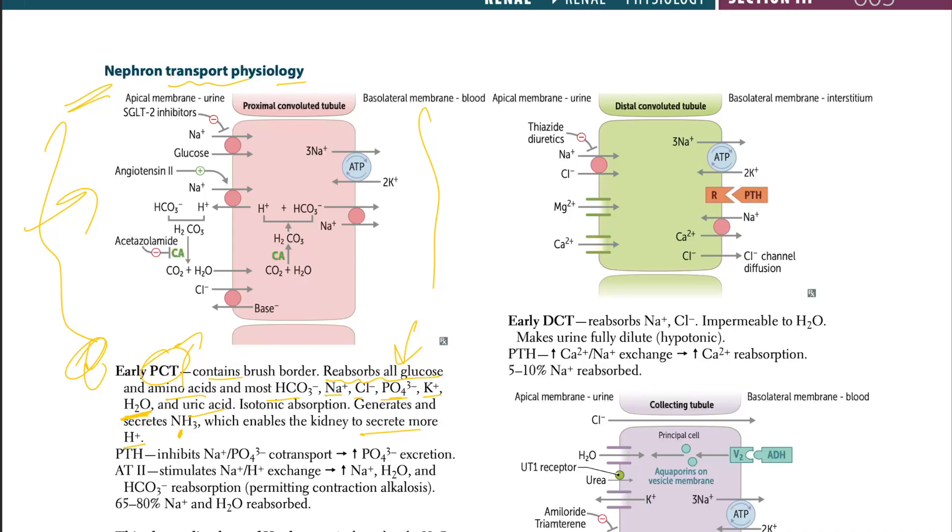It is isotonic absorption and generates and secretes NH3, which enables the kidney to secrete more hydrogen. PTH inhibits sodium phosphate co-transporter, which causes increased phosphate excretion. Remember the job of PTH. The PTH is there to dump. So the way I call it is, instead of calling PTH, phosphate dumping hormone, it's going to dump the phosphate no matter where. So it's dumping the phosphate and it's going to keep the calcium in.